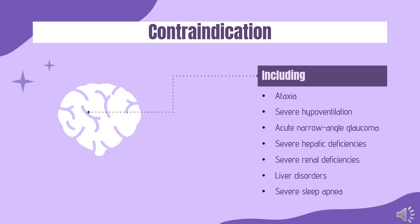Contraindications: Use of diazepam should be avoided, when possible, in individuals with ataxia, severe hypoventilation, acute narrow-angle glaucoma, severe hepatic deficiencies, hepatitis and liver cirrhosis (which decrease elimination by a factor of 2), severe renal deficiencies (e.g., patients on dialysis), liver disorders, severe sleep apnea, severe depression particularly when accompanied by suicidal tendencies, psychosis, and pregnancy or breastfeeding.